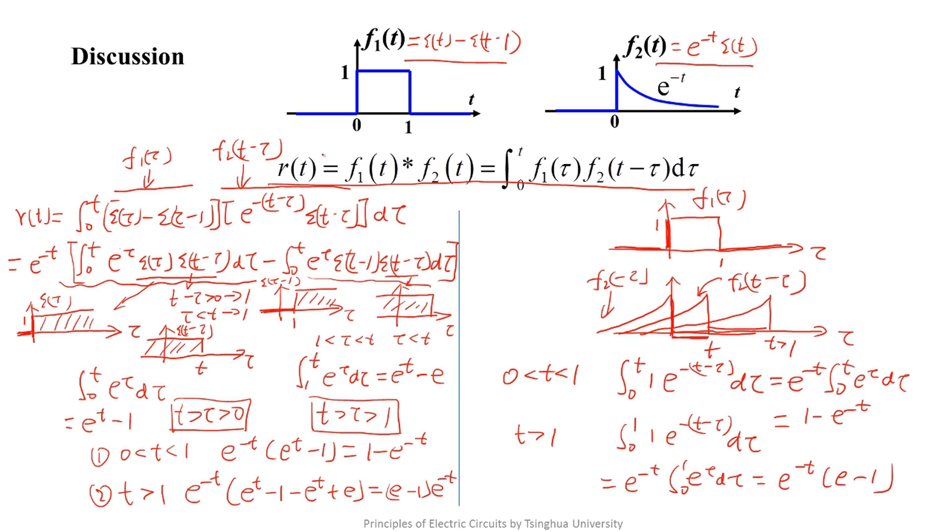F1 convolutes F2 here. According to the commutative law, it equals F2 convolutes F1. We hope you to calculate F2 convolutes F1 with both the left and the right method respectively. You should get the same feeling for the degree of difficulty.